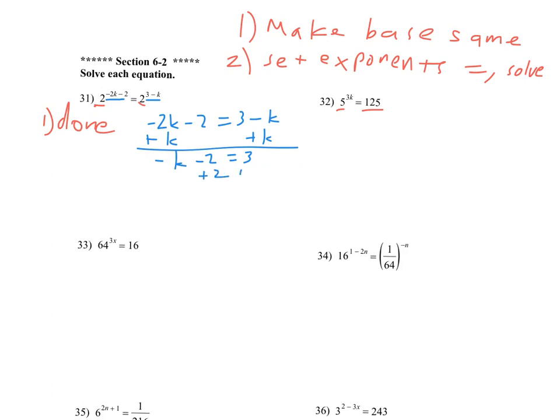And that's going to give me negative k minus 2 equals 3. And then I'm going to add 2 to the other side. I get negative k equals 5. And then I need to divide by negative 1. And so k equals negative 5. And that's it.